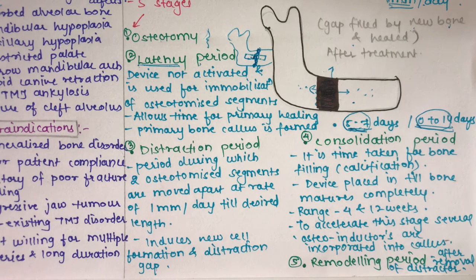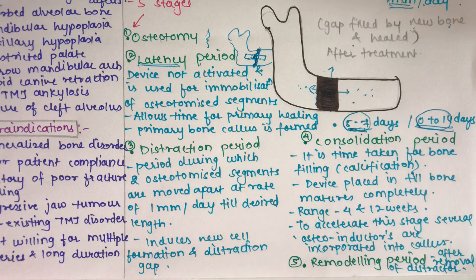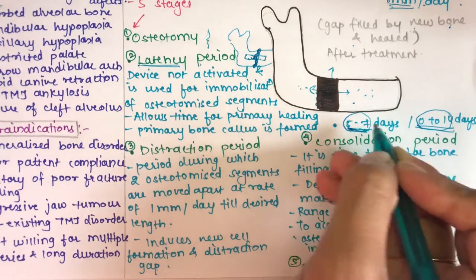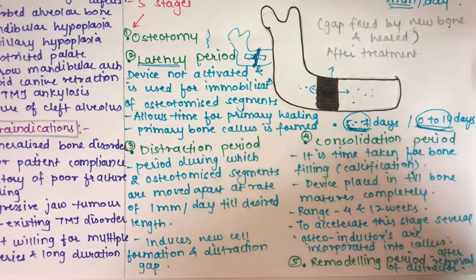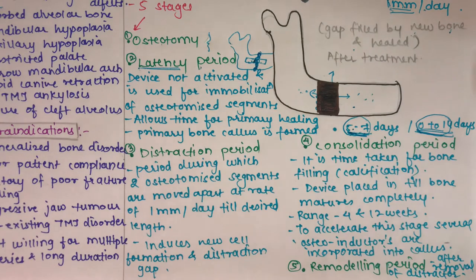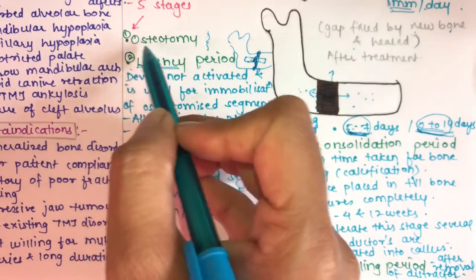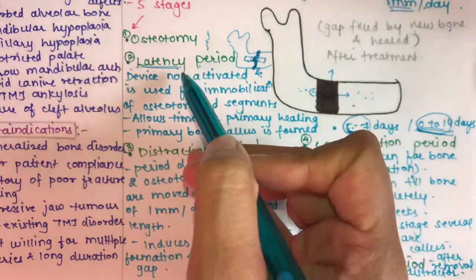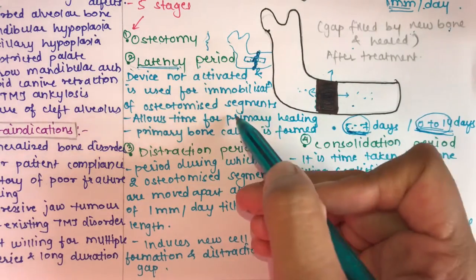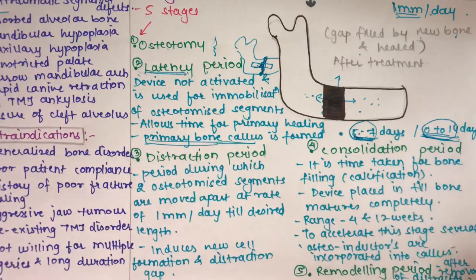If the latency period is too short, it results in improper callus formation and failure of consolidation. If it is too long, ossification of the callus occurs, leading to failure of distraction due to calcification. It should be optimized at five to seven days, or up to fourteen days by some literature — not too long or too short. The latency period is solely for formation of primary bone callus with no device activation.